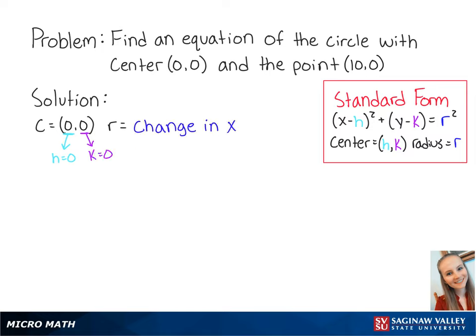The radius is equal to the change in x from the center (0,0) and the given point (10,0). This means that the radius is equal to 10 minus 0, which is equal to 10.